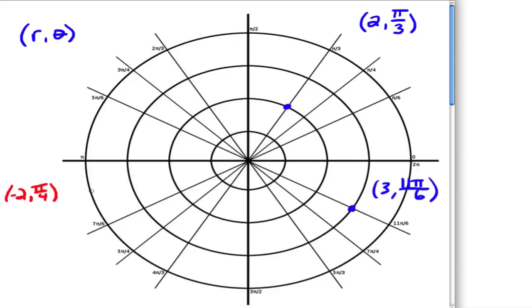Okay, so for example, negative 2 pi over 4, you compare it to pi over 4, and then you go backwards, 1, 2, and read that spot right there. That's the point, negative 2, comma, pi over 4.